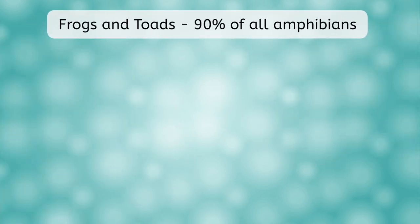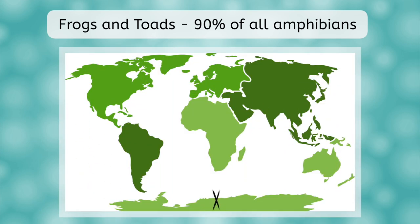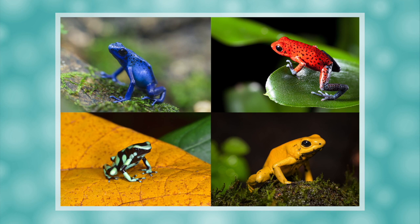Frogs and toads make up 90% of all amphibians and can be found on every continent except Antarctica. But it's the frogs in the tropical rainforests of Central and South America that you need to keep an eye out for. That is where poison dart frogs live, and these animals are considered the most toxic and poisonous species on Earth. One frog can contain enough poison to kill 20,000 mice. Are you curious how predators know to leave these frogs alone? Think back to monarch butterflies — their bright colors are huge 'DO NOT EAT ME' signs.